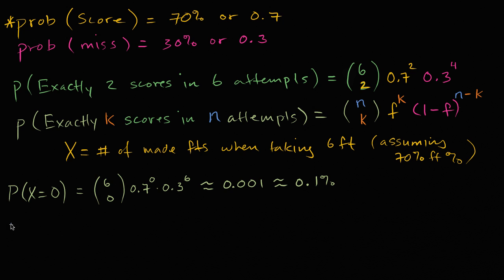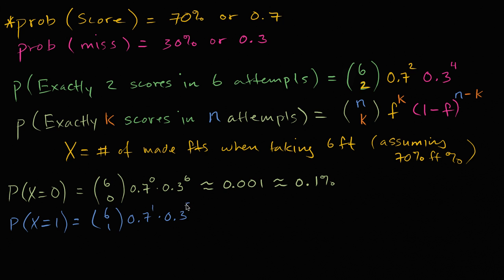So what is the probability that our random variable is equal to one? This is going to be six choose one, times 0.7 to the first power, times 0.3 to the fifth power. I calculated this, and it's approximately 0.01, or one percent. So still a fairly low probability — ten times more likely than x equals zero, but still fairly low.